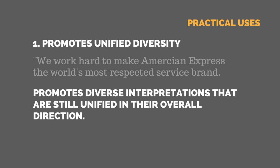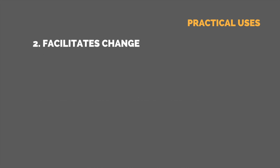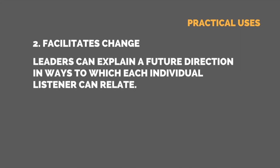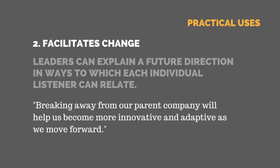Strategic ambiguity also facilitates change in organizational life. People are often going through transition, and leaders can explain a future direction in ways to which each individual listener can relate. For example, if your company is no longer going to be funded by its parent company, a leader using strategic ambiguity could say: 'Breaking away from our parent company will help us become more innovative and adaptive as we move forward.'